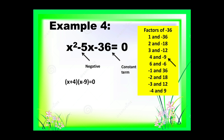So we have the quantity of x plus 4 times the quantity of x minus 9 is equal to 0. Equating the two factors to 0: x plus 4 is equal to 0, and x minus 9 is equal to 0. Transposing positive 4 and negative 9 to the other side — do not forget to change the sign — we get x is equal to negative 4 and x is equal to positive 9. The roots of x squared minus 5x minus 36 equals 0 are negative 4 and positive 9.